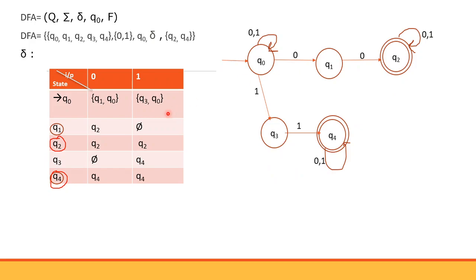Now let's fill the transition table. Q0 on 0 loops back and also goes to Q1; Q0 on 1 similarly loops and goes to Q3. Q1 on 0 goes to Q2; Q1 on 1 has no transition. Q2 on 0 and 1 loops back to Q2 — it is a final state. Q3 on 1 goes to Q4; Q3 on 0 has no transition. Q4 on 0 and 1 loops back to Q4 — it is a final state.